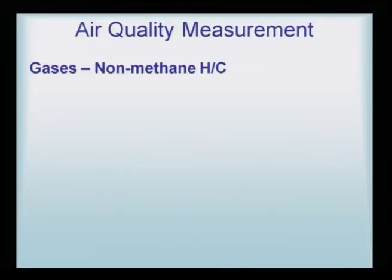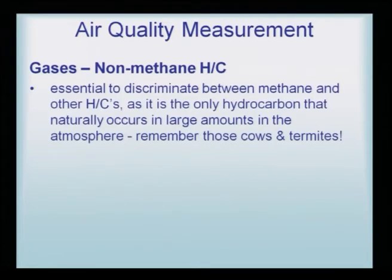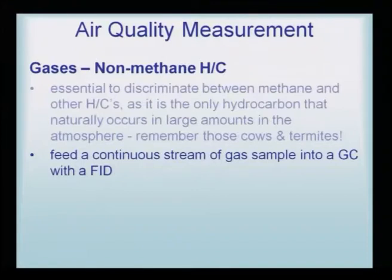Non-methane hydrocarbons — that is H and C — are analyzed to discriminate between methane and other hydrocarbons, as methane is the only hydrocarbon that naturally occurs in large amounts in the atmosphere. It requires feeding a continuous stream of gas sample into a GC with an FID. Such methane or methane-type gases can be directly analyzed on a gas chromatograph with a flame ionization detector, an FID detector.